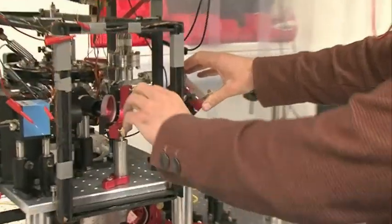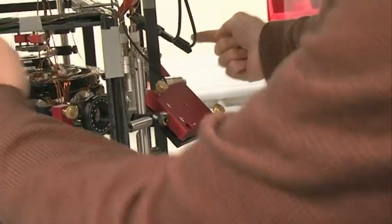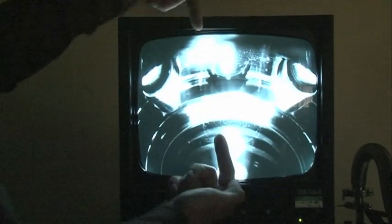So this is a cloud of half a billion rubidium atoms. And we shine laser light from all different directions onto this cloud. And this is arranged in a smart way.